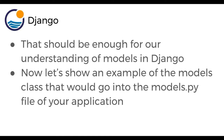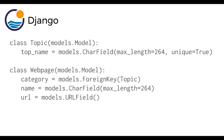Now let's show an example of the models class that would go into the models.py file of your application. We have these model classes and they inherit from Django's built-in models.model class. So let's imagine we have a topic model — we would have the class topic, and then top_name is going to be models.CharField. And then as arguments, you pass in these parameters that are constraints — so we say what the max_length is, and whether every topic name has to be unique, set that unique equal to true. Then we have another model for a web page — each of these classes is going to act like a table in your database. We have category, name, URL — and note how category equals models.ForeignKey, and we pass in topic there because that's going to be a foreign key from the topics model.